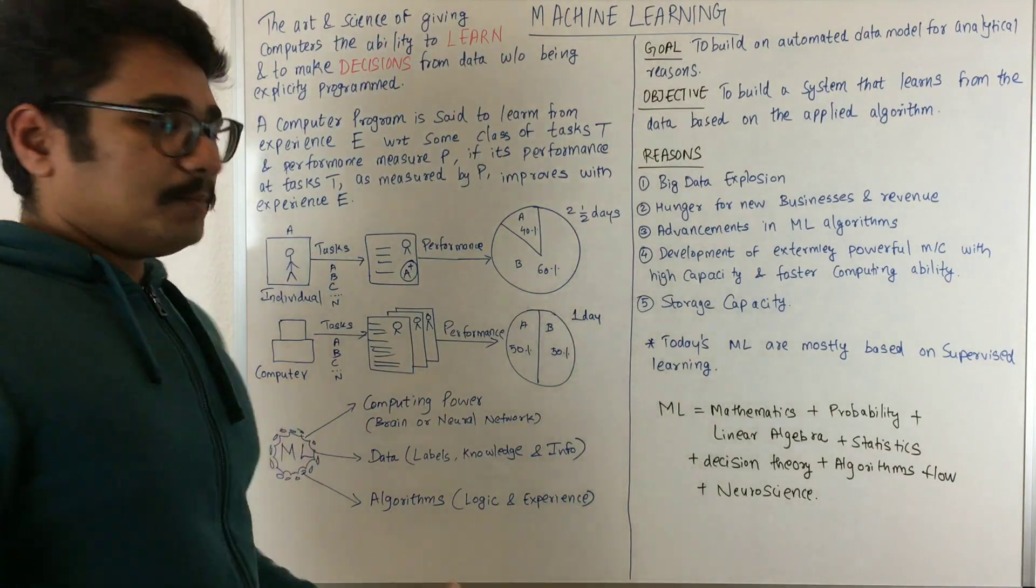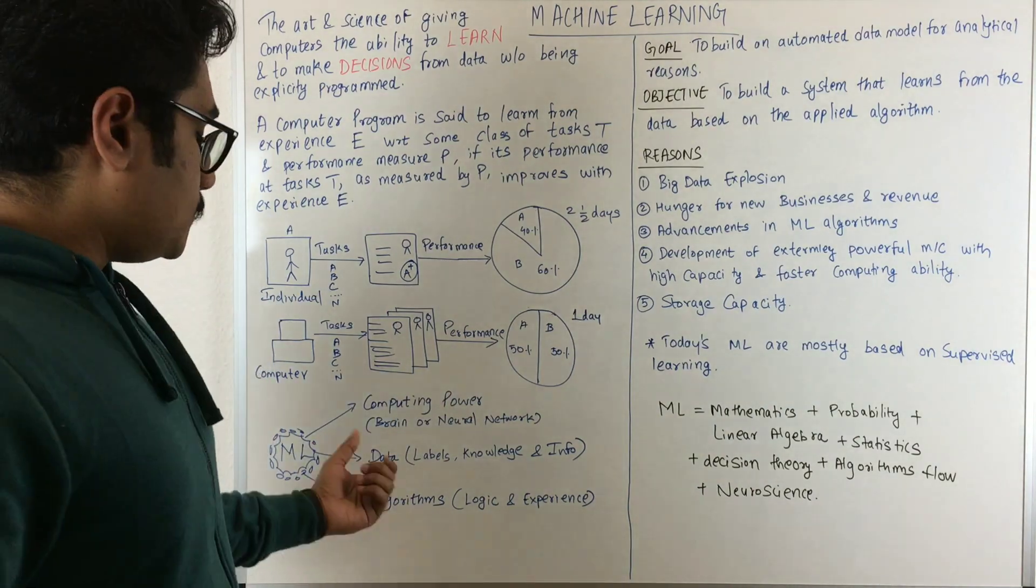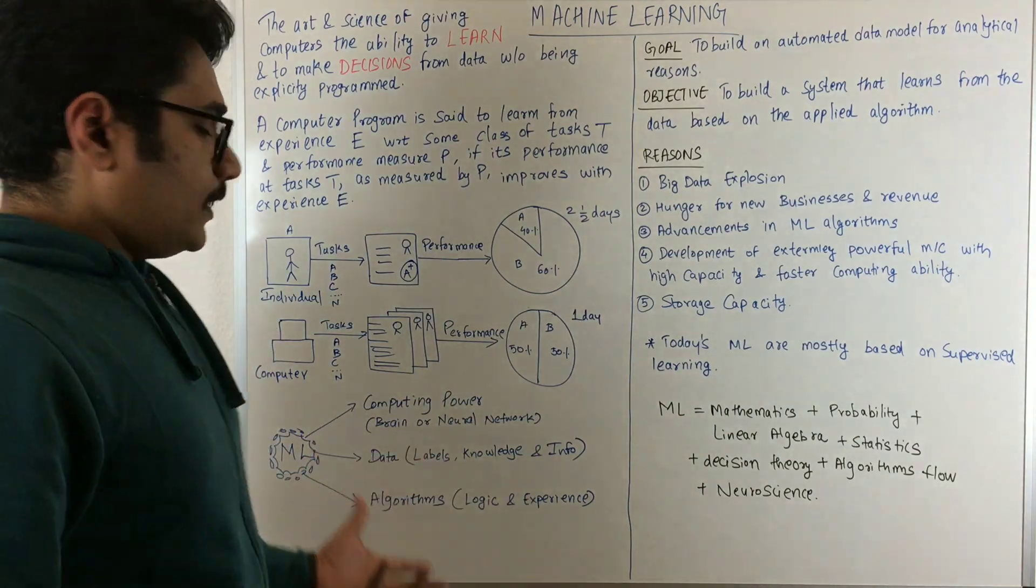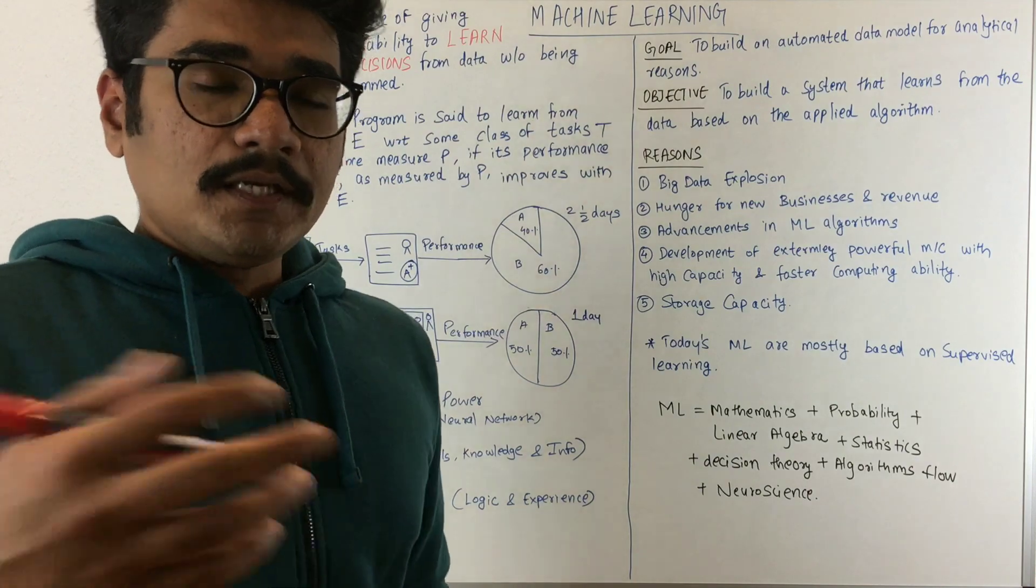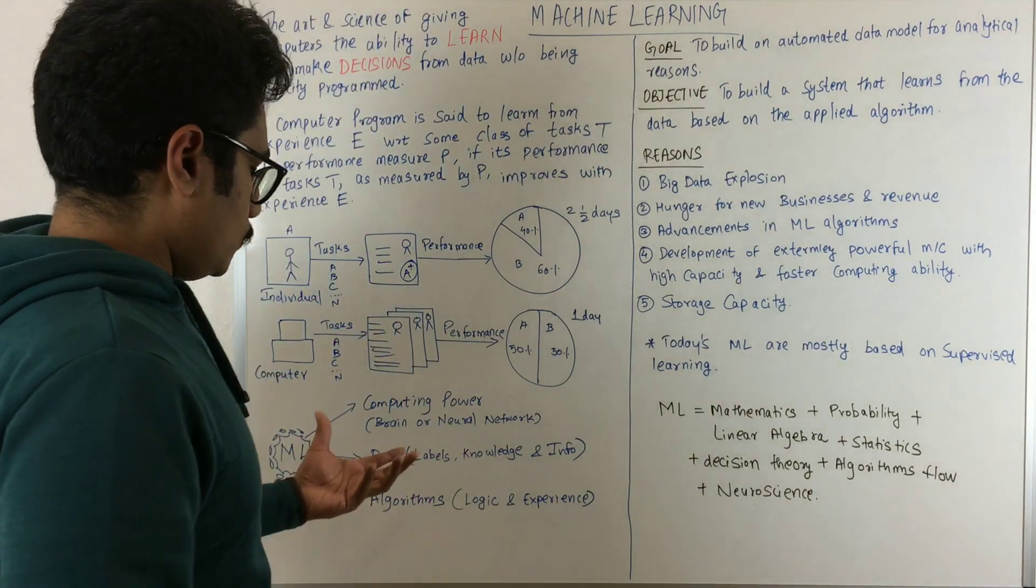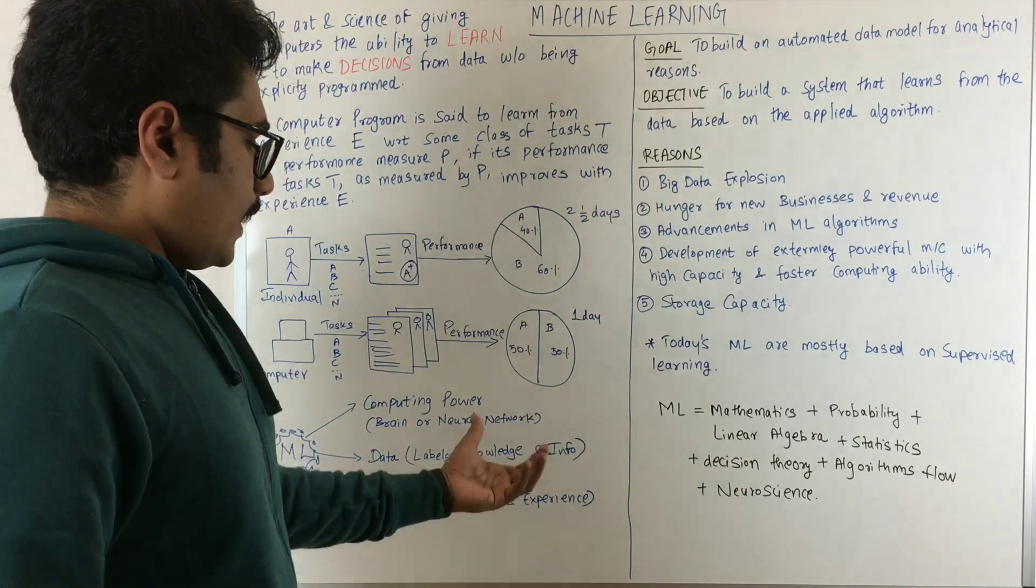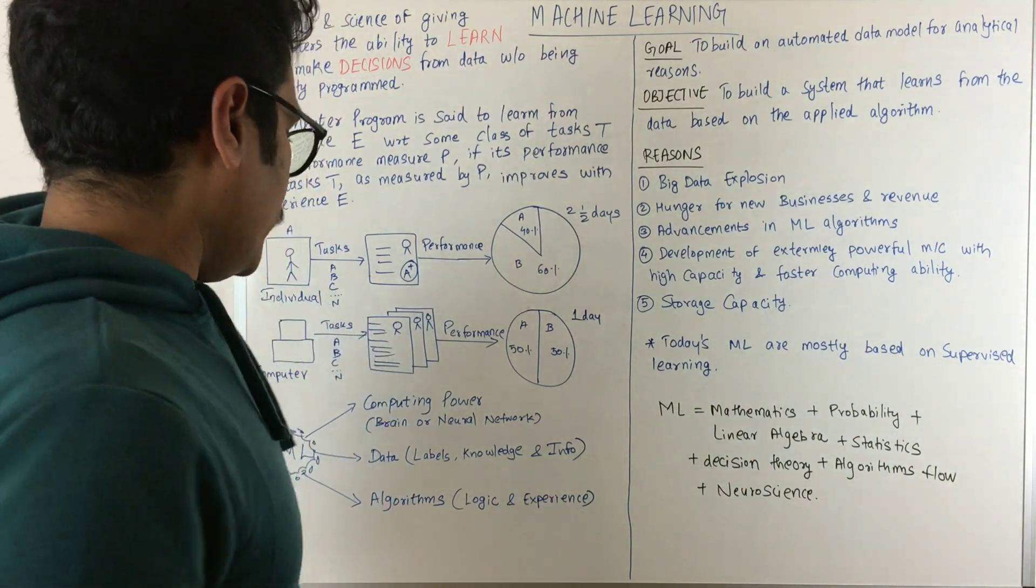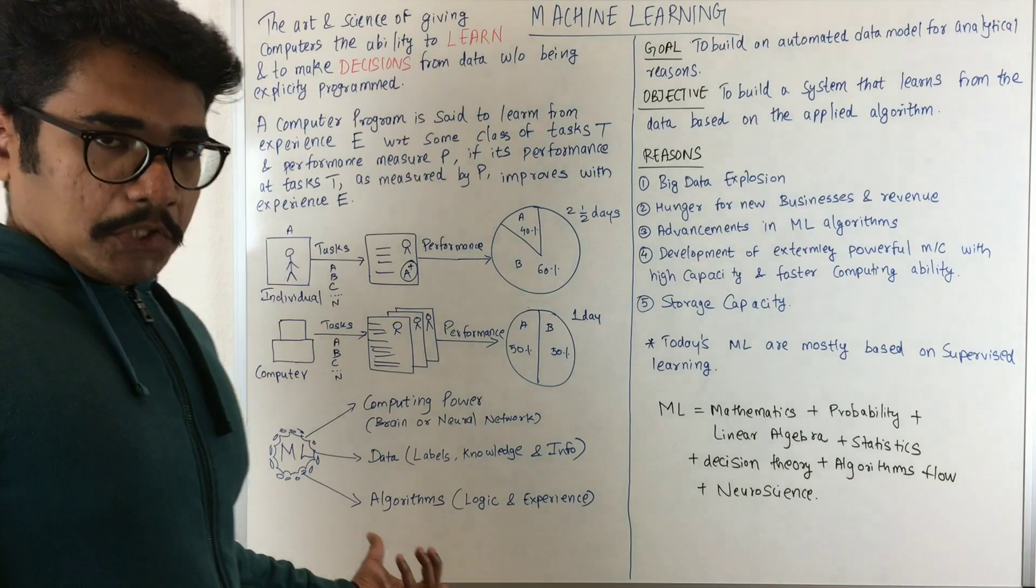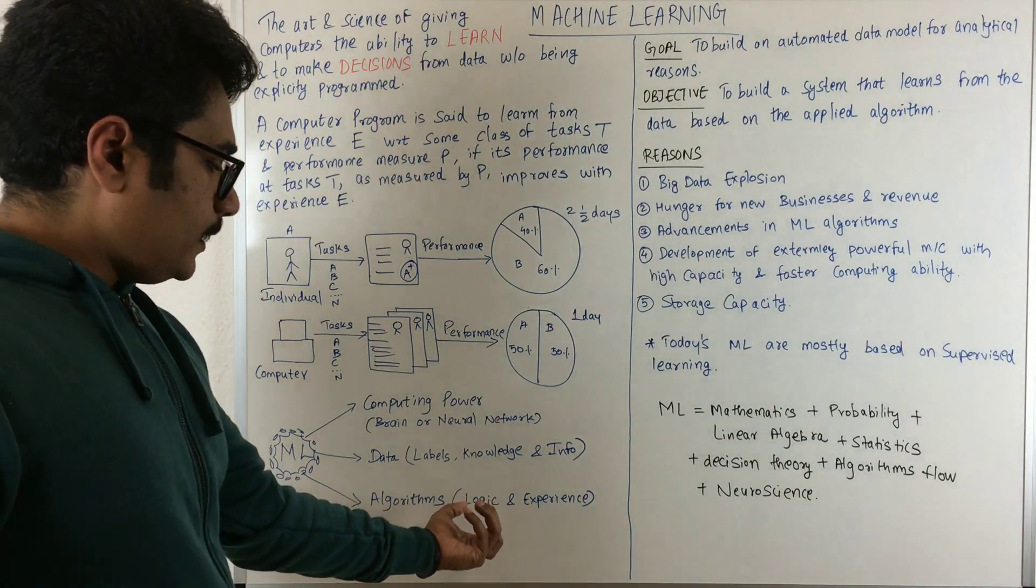You have some data, and this data should be good data and diverse data so you can apply it properly to your algorithm. This data basically labels or comes from knowledge and other information you get.